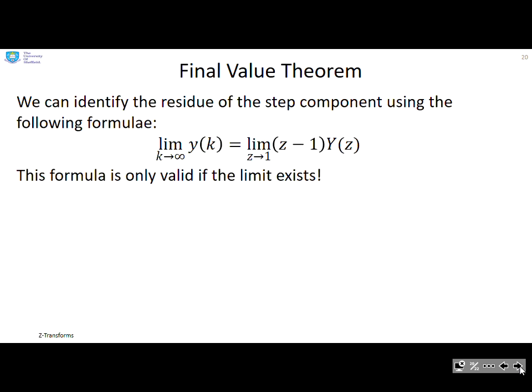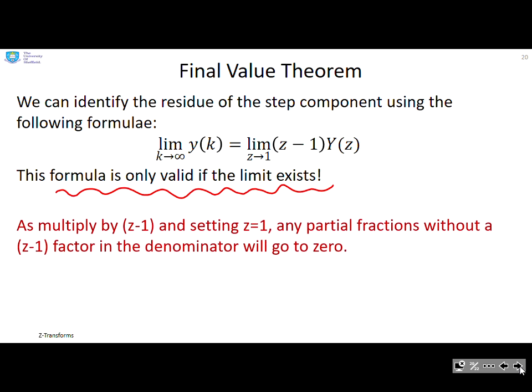What does the final value theorem say? We're not going to prove this. It says the limit as k goes to infinity of y(k) is the limit as z goes to 1 of (z minus 1) times Y of z. Re-emphasize this formula is only valid if the limit exists, so check the limit exists first. As a hint, if you multiply by z minus 1, then clearly anything which hasn't got z equals 1 as a factor in the denominator is now going to go to 0 when you set z equal to 1.